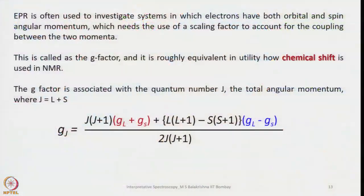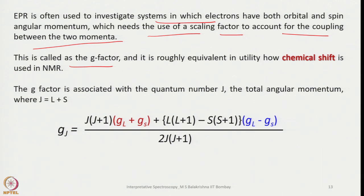EPR is often used to investigate systems where electrons have both orbital and spin angular momentum, requiring a scaling factor — the G factor — to account for coupling between the two momenta. The G factor is roughly equivalent in utility to chemical shift in NMR. It is associated with the total angular momentum quantum number J, where J = L ± S.